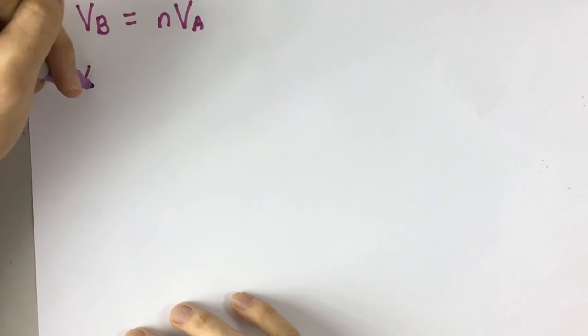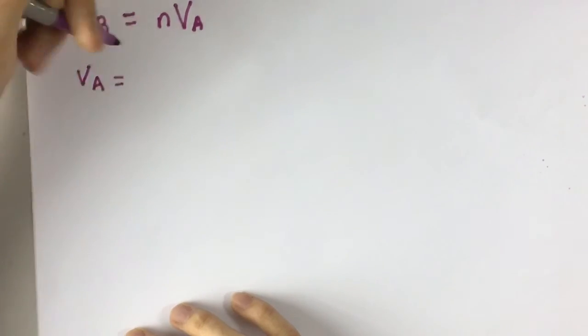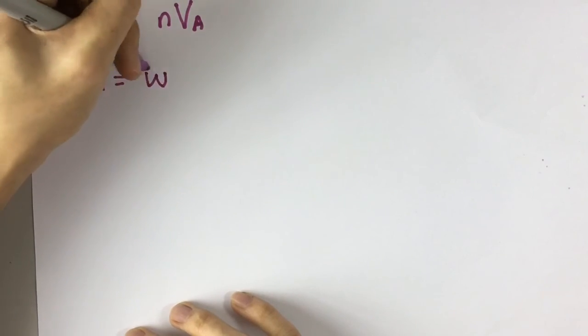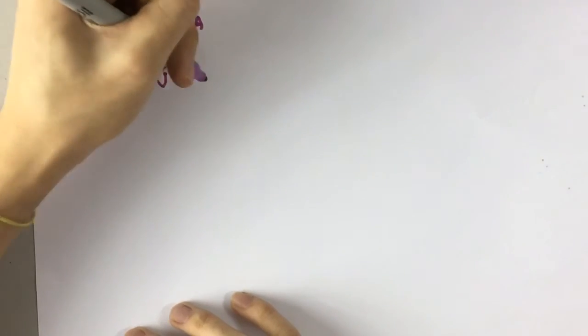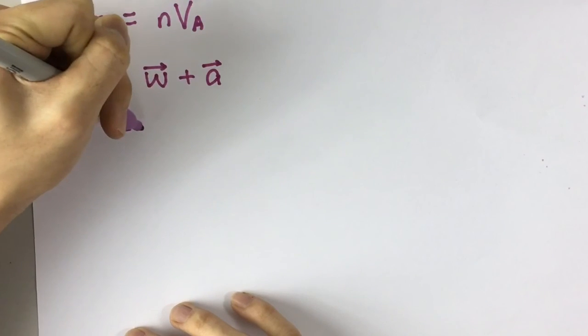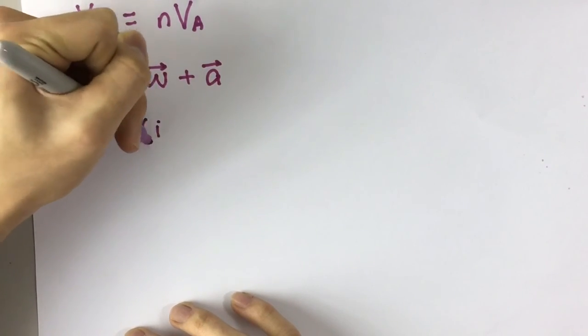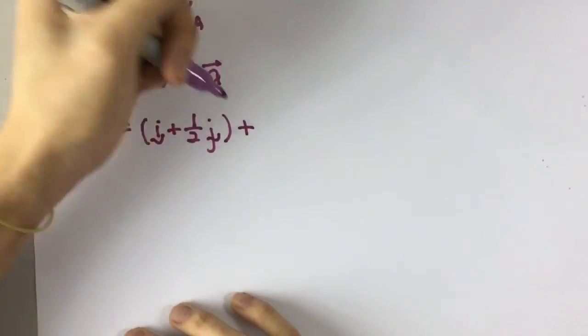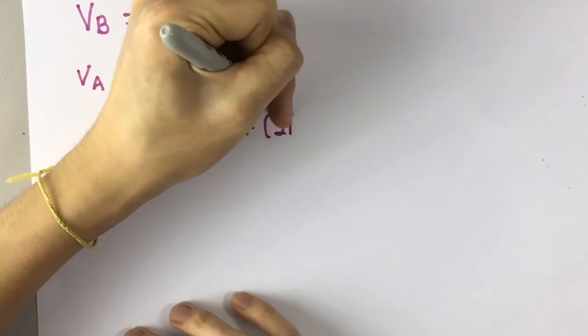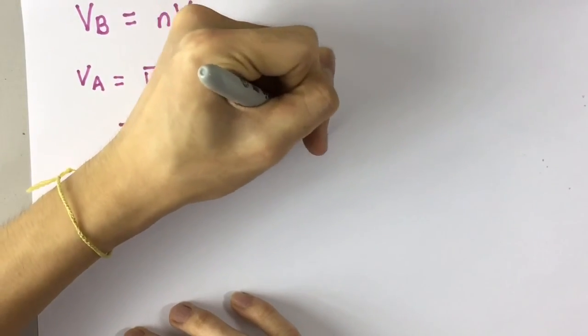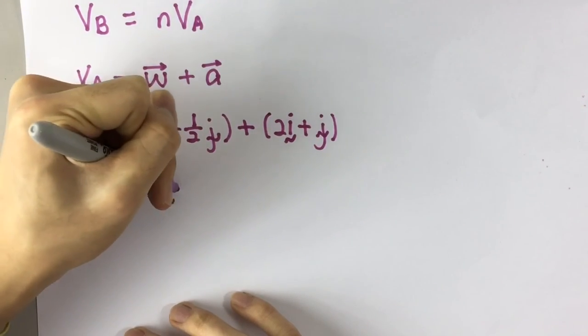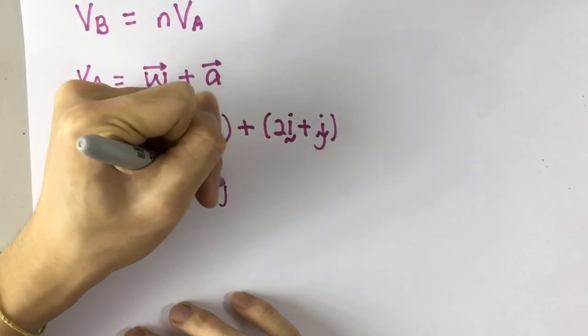So for boat A, I'll call it VA, equals to, the velocity of boat A is affected by the water and its own velocity. So you should get W, which is for water, and itself. So it will be I plus 1 over 2 J plus 2I plus J. So that should get you 3I plus 3 over 2 J.